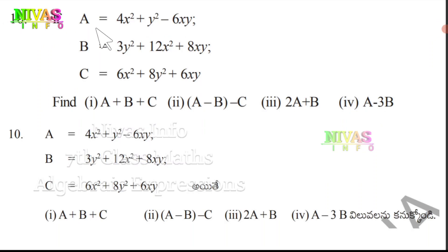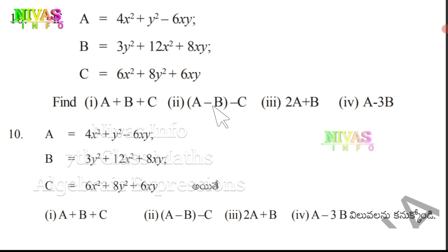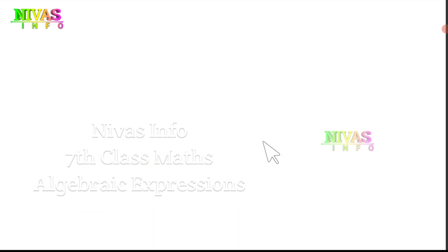Question number 10: A is equal to 4x² plus y² minus 6xy. B is equal to 3y² plus 12x² plus 8xy. C is equal to 6x² plus 8y² plus 6xy. We have to find: (i) A plus B plus C, (ii) A minus B minus C, (iii) 2A plus B, and (iv) A minus 3B.